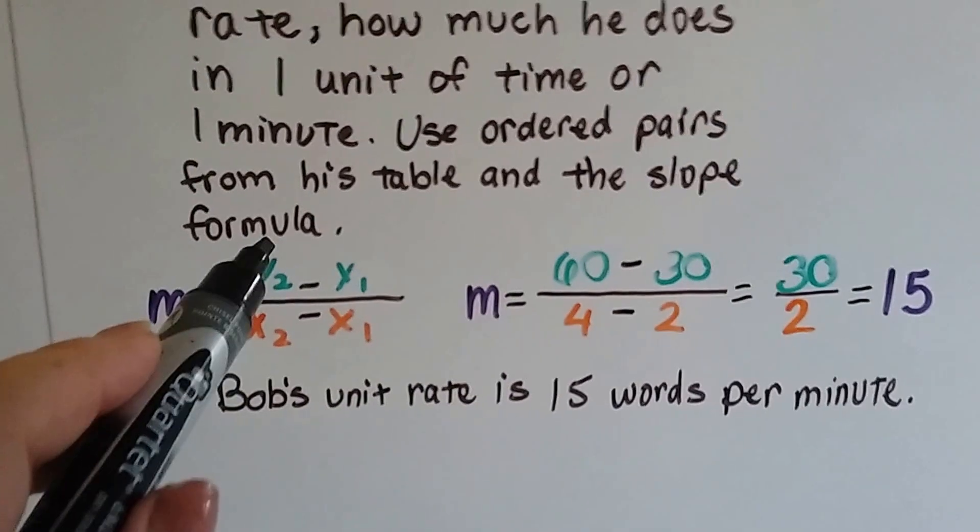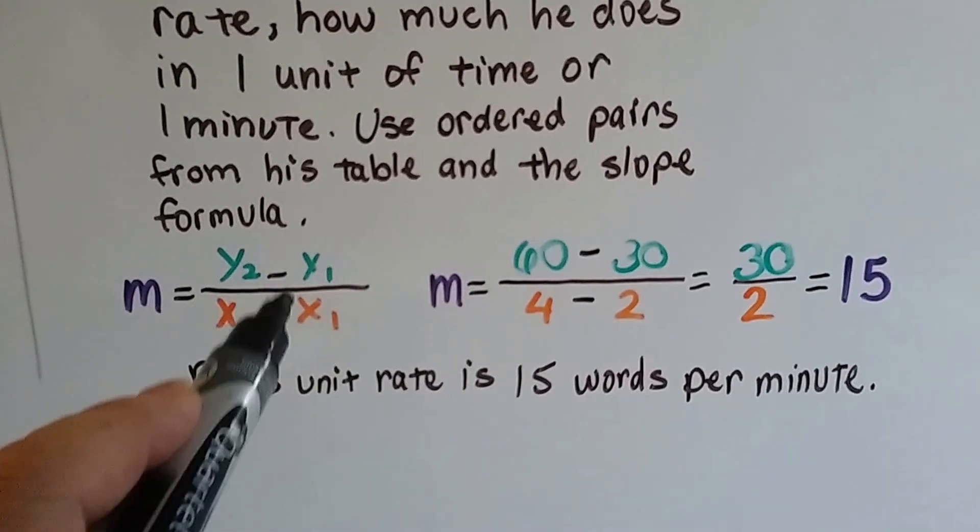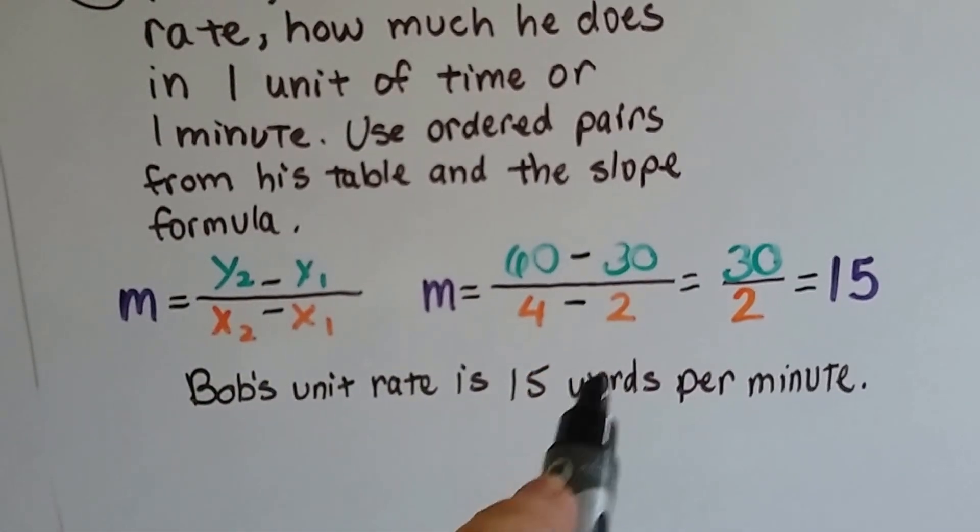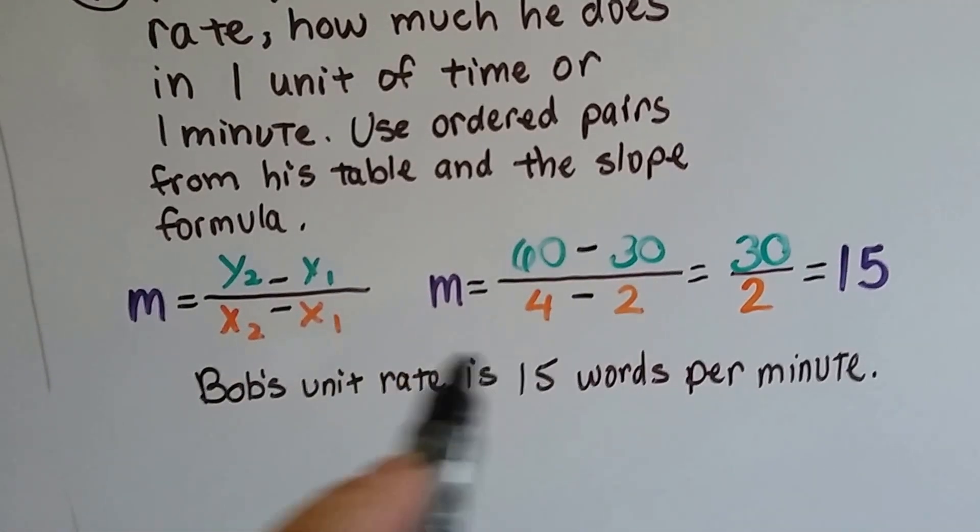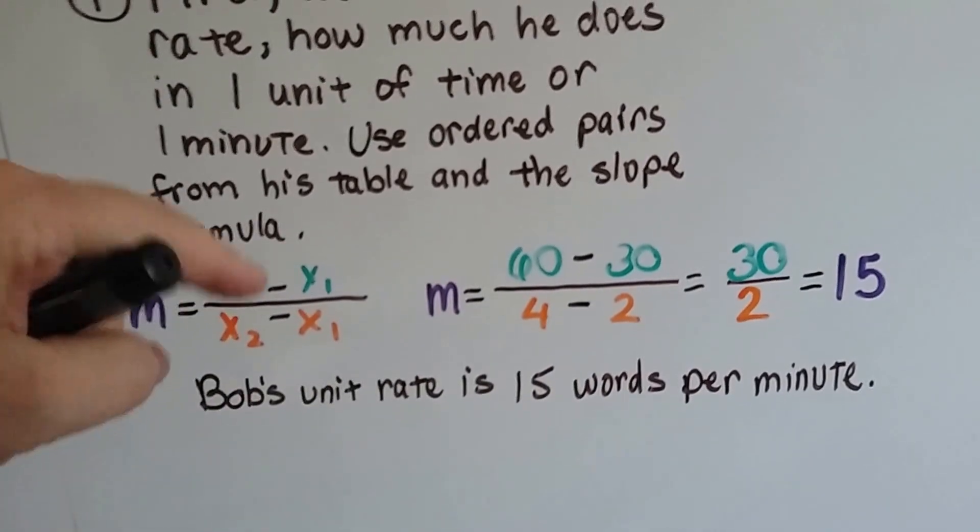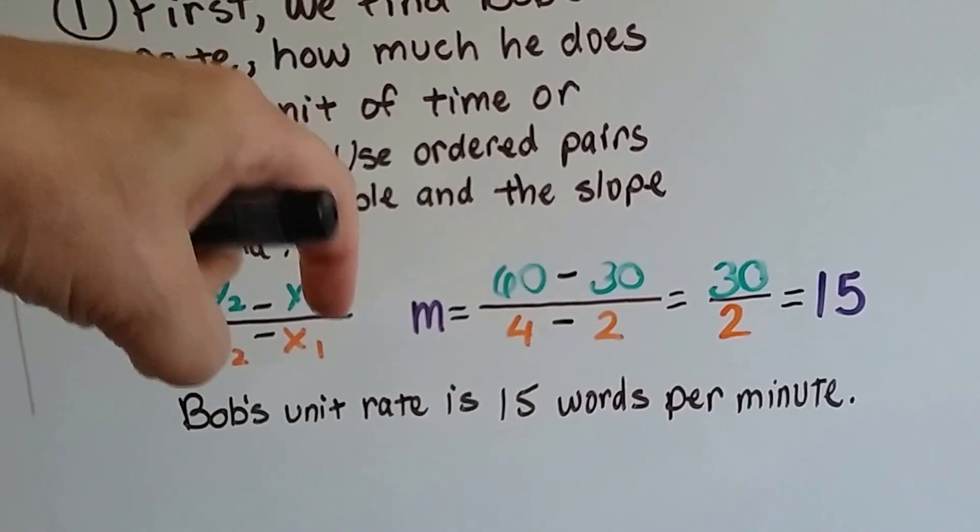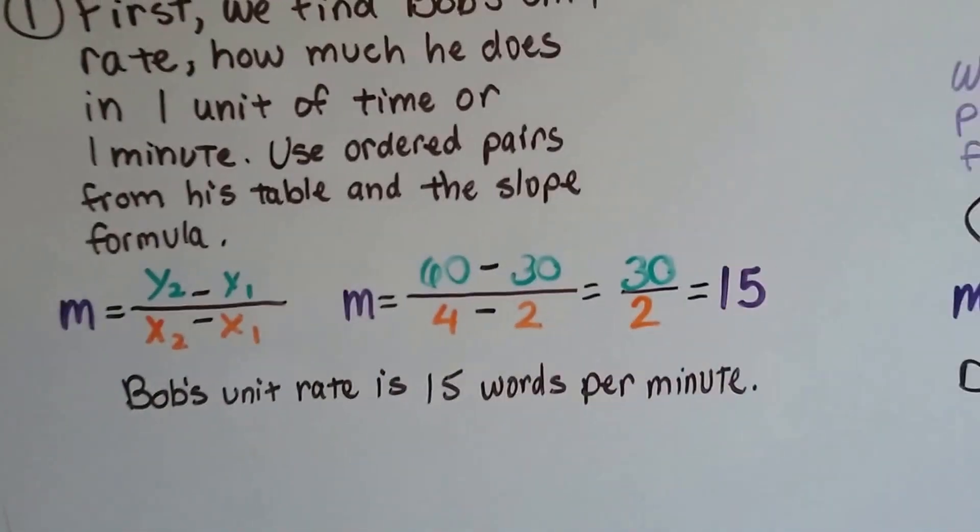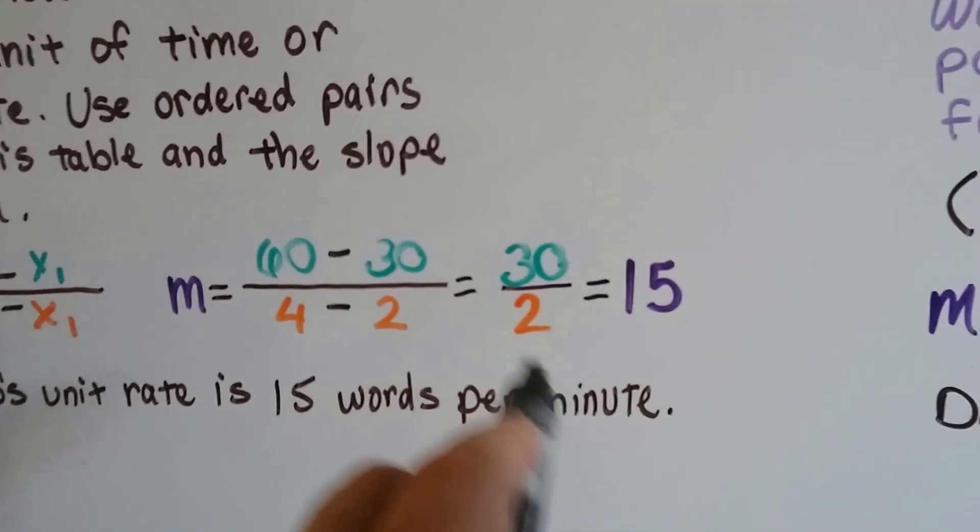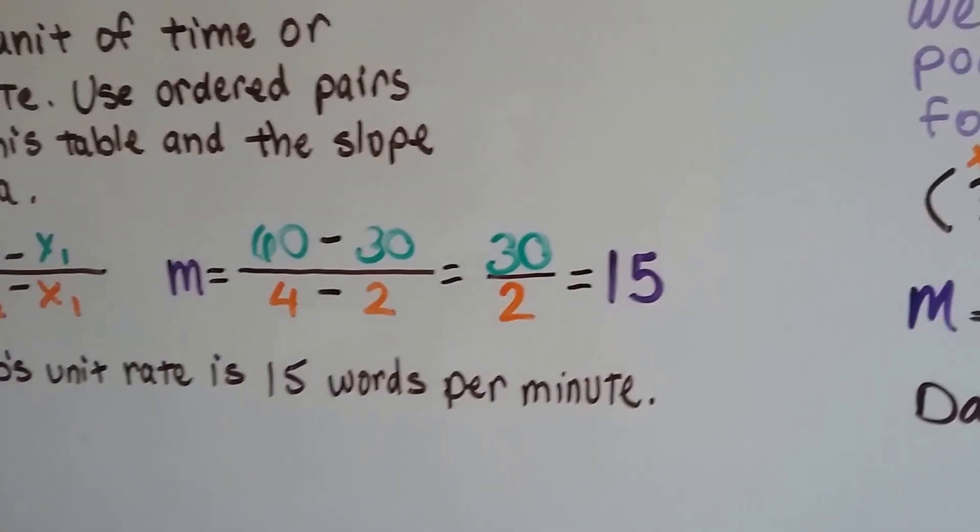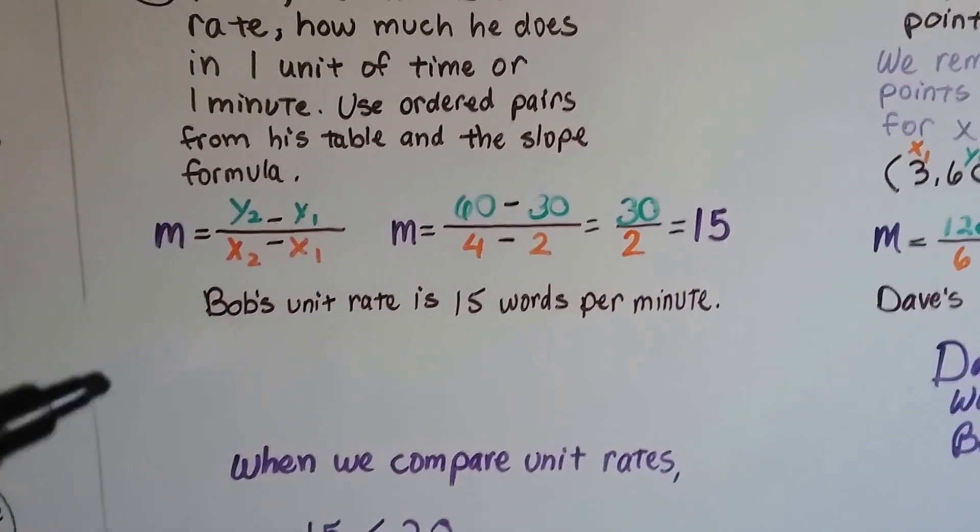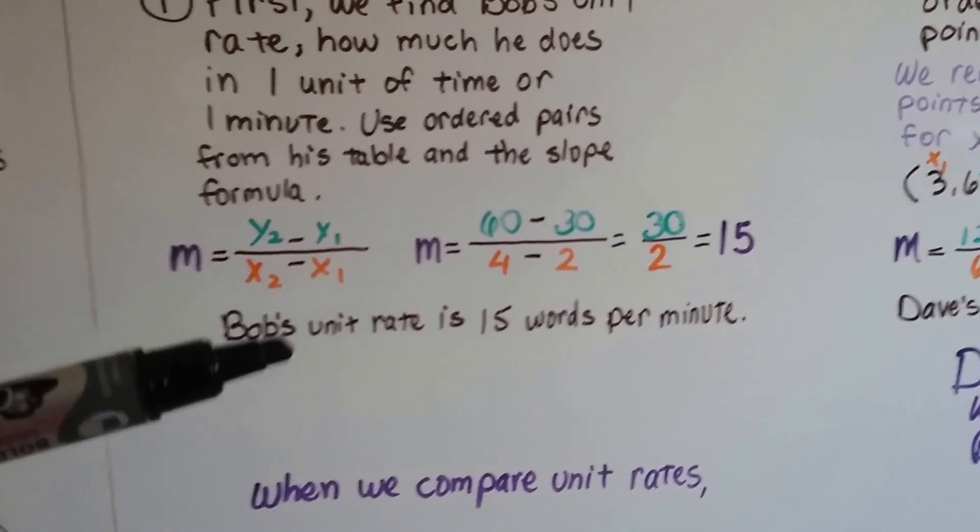We're going to do slope formula which is y2 minus y1 and x2 minus x1. 30 and 2 are the y1, x1, and 60 over 4 is the y2, x2. Make sure the x2 and y2 are first. Make sure they're on this side and the y1, x1 is on this side. So we do 60 take away 30 and we get 30, and 4 take away 2 we get 2. We simplify the 30 over the 2 and we get 15. The slope is 15.